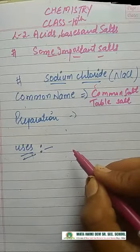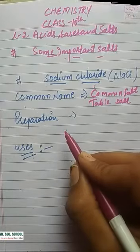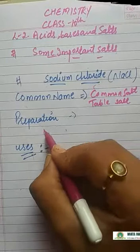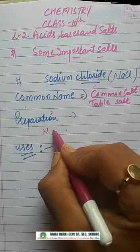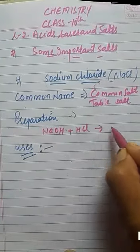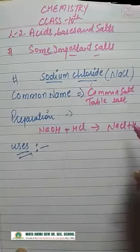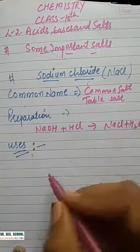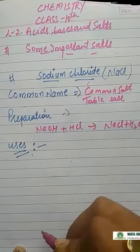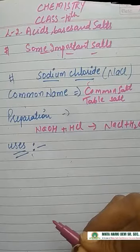How is sodium chloride prepared? Sodium chloride is prepared by the reaction between sodium hydroxide NaOH and HCl. NaOH plus HCl gives sodium chloride plus water. So NaCl is formed from this neutralization reaction.